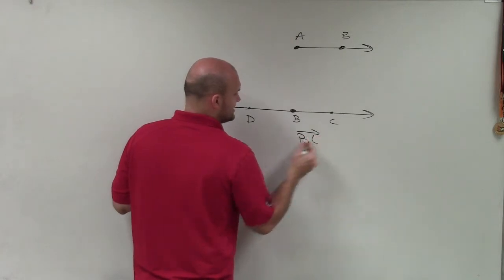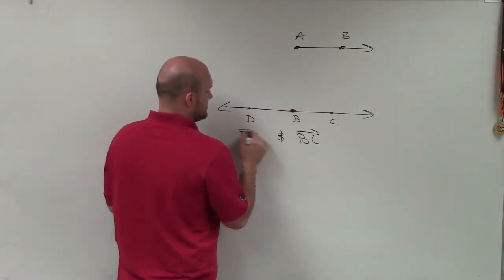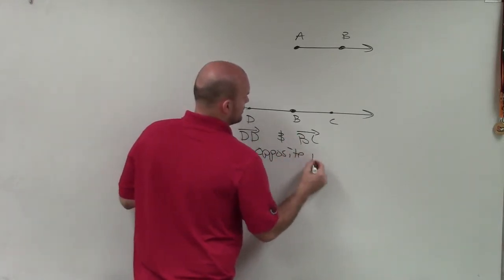So I can say BC and BD are opposite rays.